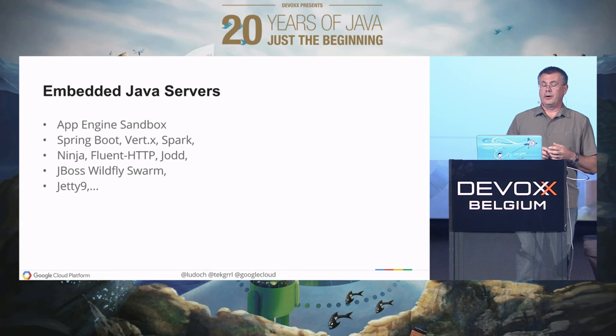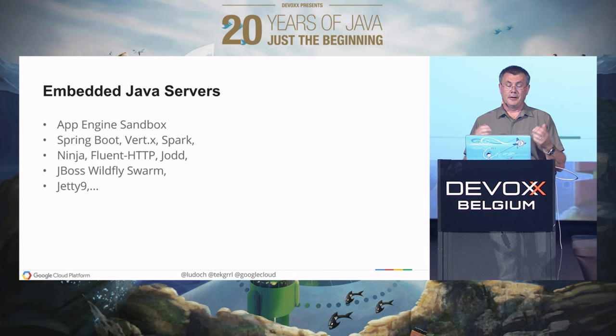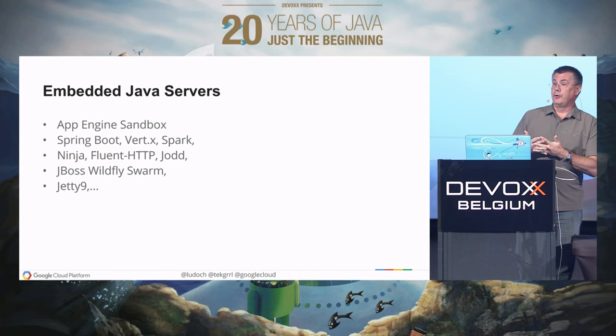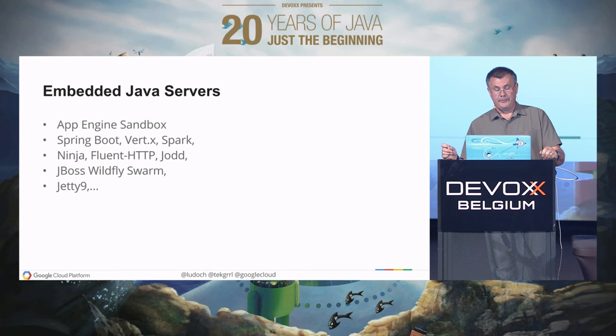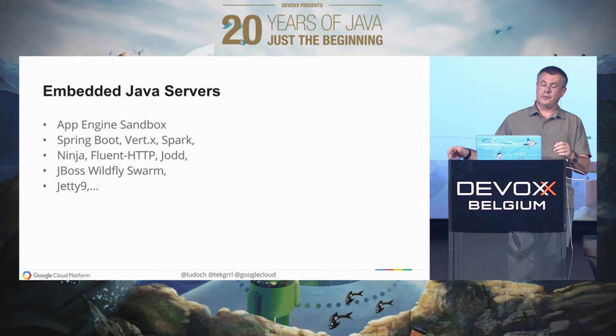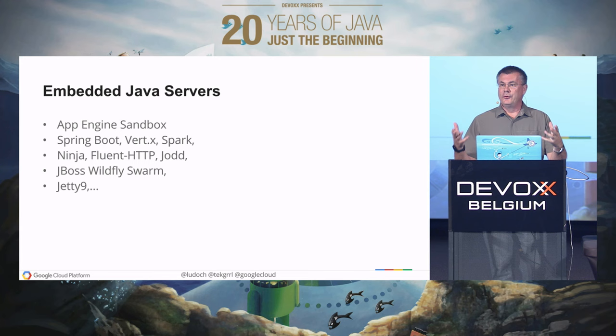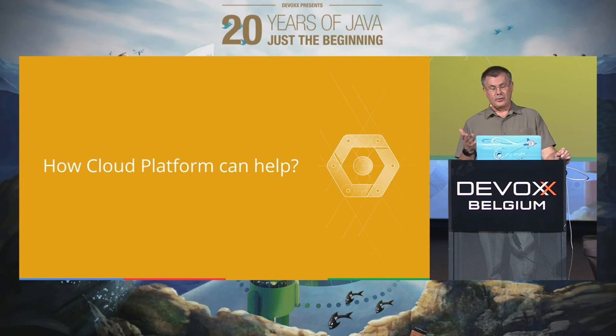Some examples in Java land: Java servers that can be seen as embedded, providing support for running microservices, include the original App Engine sandbox. And then new emerging web frameworks like Spring Boot, Vert.x, Spark, Ninja, Fluent HTTP — all those servers are now written so that instead of deploying applications to them, you deploy them with your application. So you have a single unit and completely control the versioning of your service.